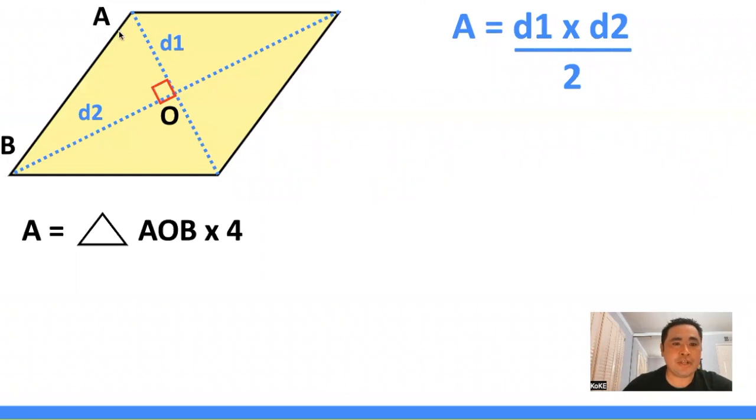In this problem, instead of figuring out the area of the entire rhombus, we can think about finding the area of triangle AOB and multiplying that by 4 to find the entire area.